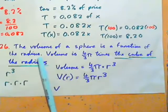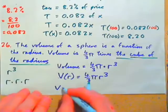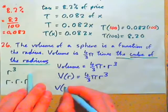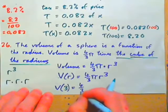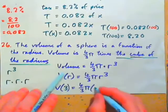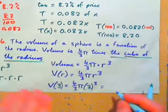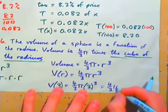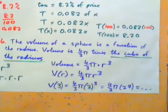What is the volume of a sphere with radius, let's say, 3 feet? V of 3 would be 4 thirds pi times 3 cubed, and we covered that in the previous chapter. That would be 4 thirds pi times 27, and so on.